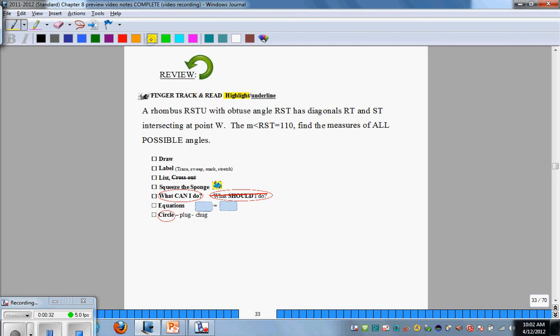Start by finger tracking and reading with me. It says a rhombus RSTU with an obtuse angle RST has diagonals RT and SU intersecting at point W. The measure of angle RST is 110. Find the measure of all possible angles.